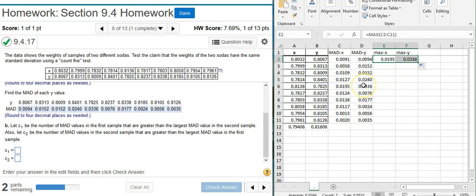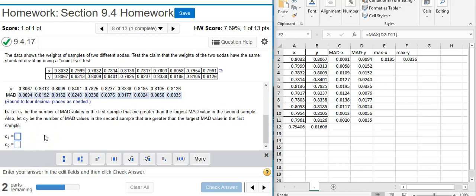So C1 is the number of MADs values in the first sample. So that's column C. That are greater than the largest MADs value for the second sample. So we're looking for all the numbers in column C that are greater than this number in column F. So the first one is not greater. Neither is the second one. Not the third one. No. No. No. And looking at all the available values, none of them are greater. So therefore, C1 is going to be zero.